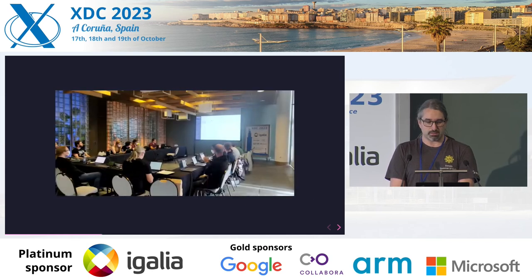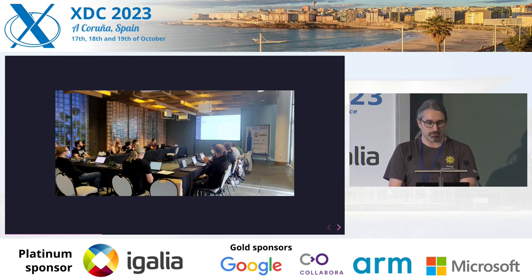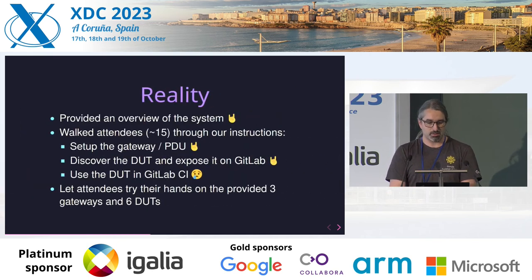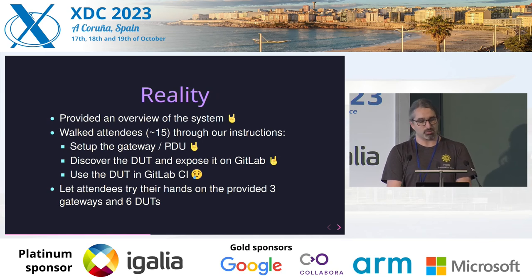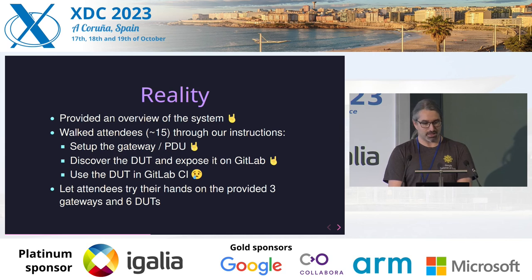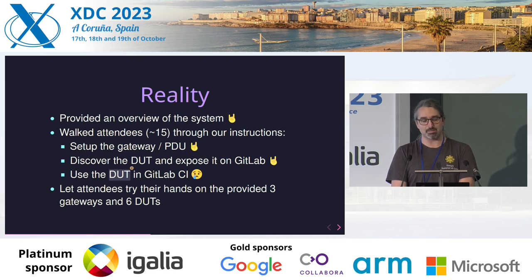So that's the reality. There were a couple of people — I'm very happy with the attendance, we were about 15. We managed to set up the gateway and the PDU, which was wonderful. What didn't work is when we tried to use the dot in GitLab CI — it just wouldn't have any serial blocks. That's what happens when you don't test this part.